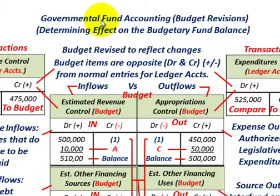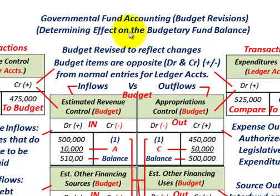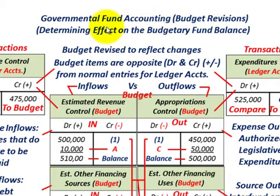What we're going to be going over here is governmental fund accounting, and we're going to be looking at budget revisions and determining the effect of our budgetary fund balance based on those budgetary revisions. So really what we're going to be looking at is how we calculate our budgetary fund balance.